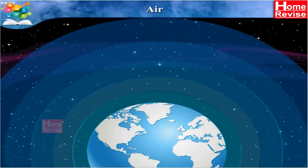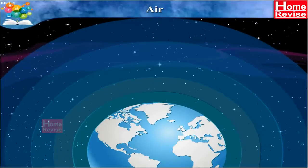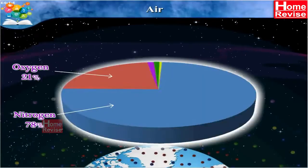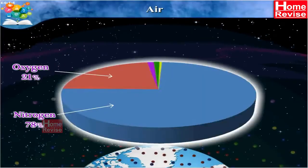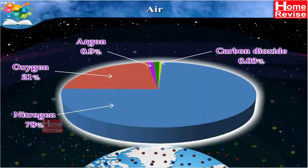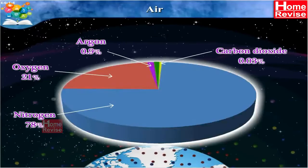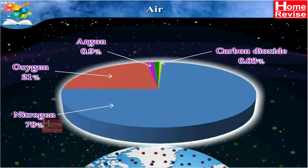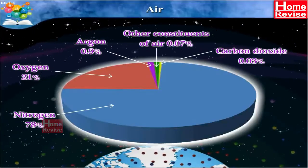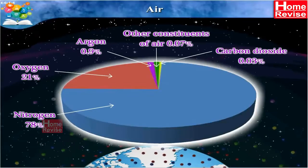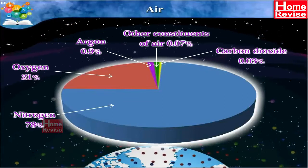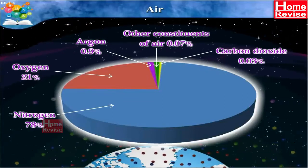The gases present in the atmosphere are nitrogen, oxygen, argon, carbon dioxide and other rare gases, as well as water vapour and dust particles.